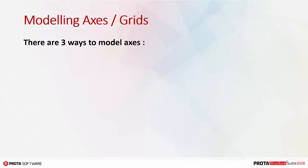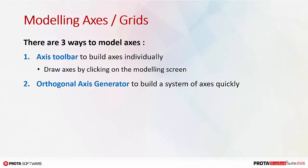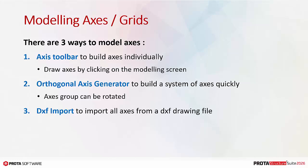There are three ways to model axes. Firstly, you can use the axis tool to build axes individually by drawing on the modeling screen. Secondly, you can use the orthogonal axis generator to build a system of axes quickly, and the axis group can be rotated by keying an angle. Thirdly, you can use the DXF import function to import all axes from a DXF drawing file, but this can only be done for a new project where no axes exist.